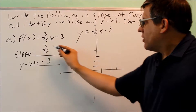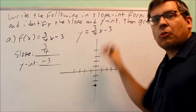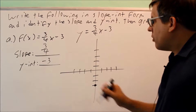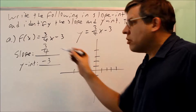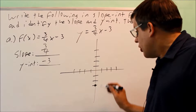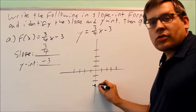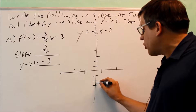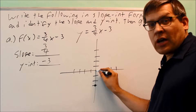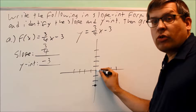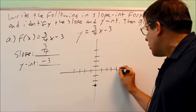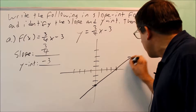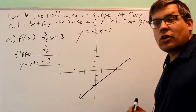The way slope works is the top number is your up-and-down movement, and the bottom number is your left-and-right movement. If both are positive, you go up and to the right from the y-intercept. So from the y-intercept at negative three, because the top number is positive, we go up three units, and because the bottom number is positive, we go to the right four units to get another point. Now we can draw a line through these two points and connect them — that's our graph.